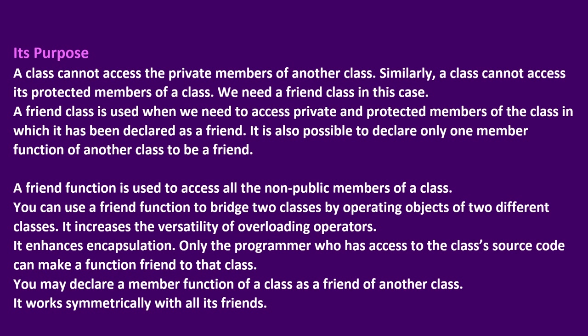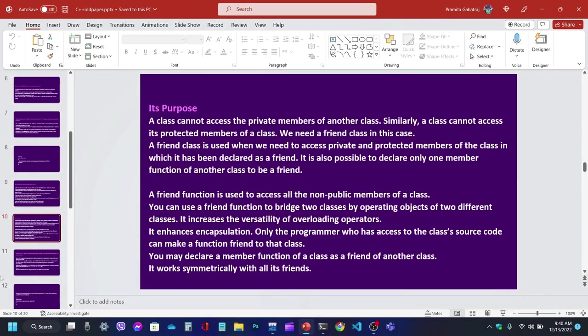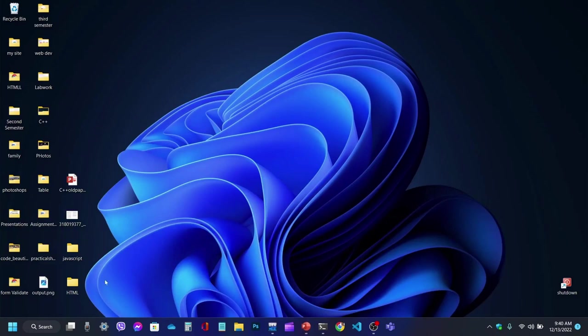Only the programmer who has access to the class source code can make a function a friend to the class. You may declare a member function of a class as a friend of another class. It works symmetrically with all its friends. Now we will go to the coding demonstration and see a friend function example.